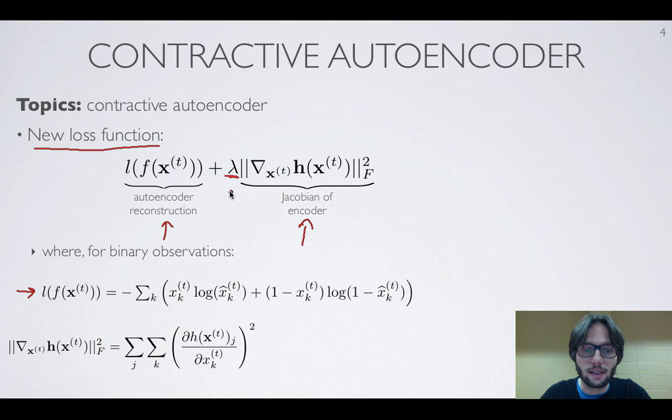So the new term we add is a weighted squared Frobenius norm of the Jacobian of the encoder, which is this thing here.